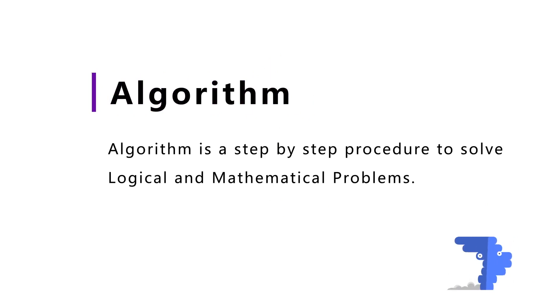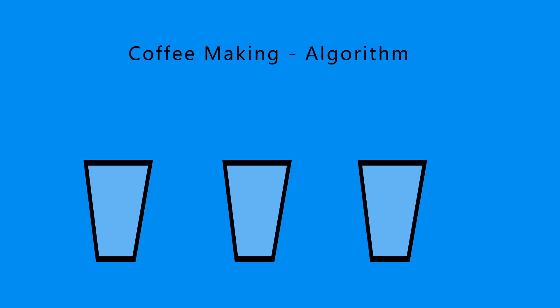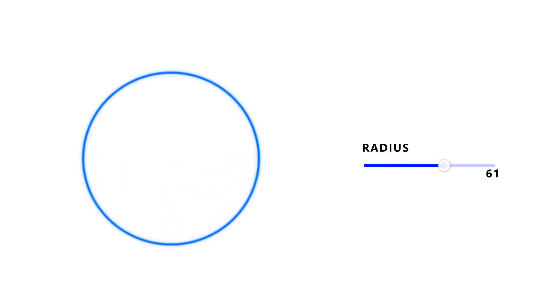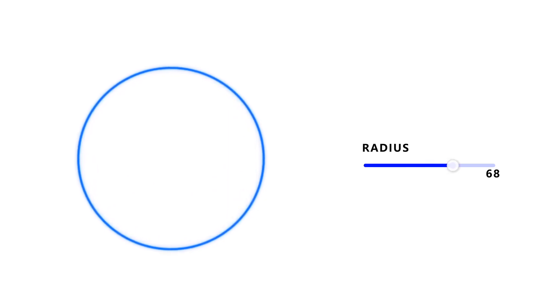Next, an algorithm is a step-by-step procedure to solve logical and mathematical problems. A practical example: coffee making. Take 3 coffees, change the parameters — change the test, change the test again — same shape but with parameters changed, you get different outputs. That is essentially the parametric process: changing parameters gives different shape outputs.